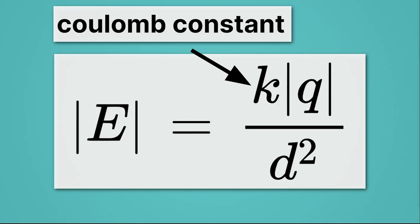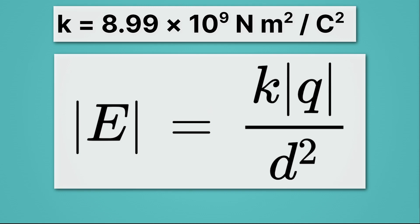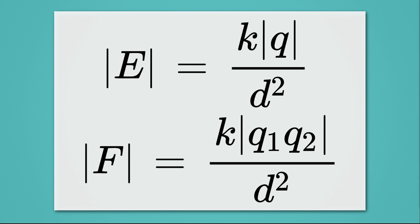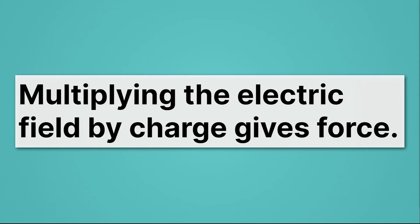Lastly, we have K, which is the coulomb constant. And it's equal to 8.99 times 10 to the 9th newtons, meters squared per coulomb squared. Well, that is a lot. But remember, all those units come from the units we're going to plug into that equation. Now, if you compare the electric field equation to the electric force equation, you can see that they're quite similar. There's just one difference. The electric force has two charges, while the electric field has just one. So, if I ever have an electric field, and I multiply it by charge, then I can get the electric force. So multiplying the electric field by charge gives force.